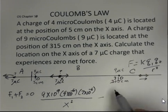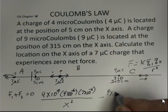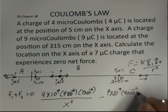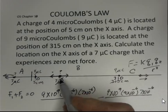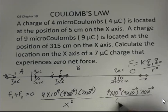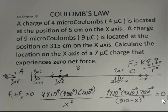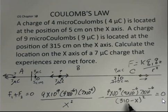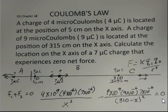Now, the force from the 9 microcoulombs charge is pointing to the left, so it is a negative force. That gives us negative 9 times 10 to the 9th, times 9 times 10 to the minus 6, times 7 times 10 to the minus 6, over the quantity 310 minus X, squared, equals 0. I'm going to let X be in centimeters — I don't like working with decimals, so I'll leave this as 310 centimeters.